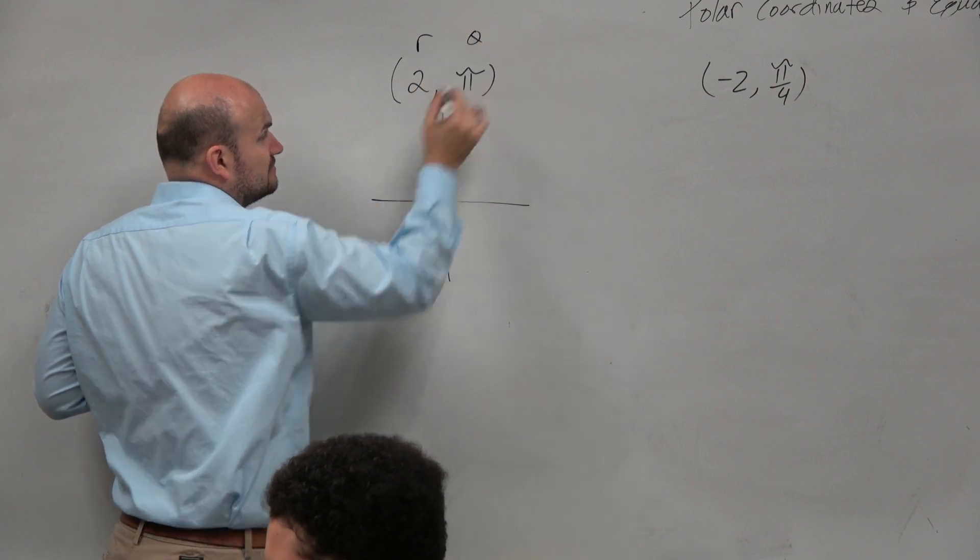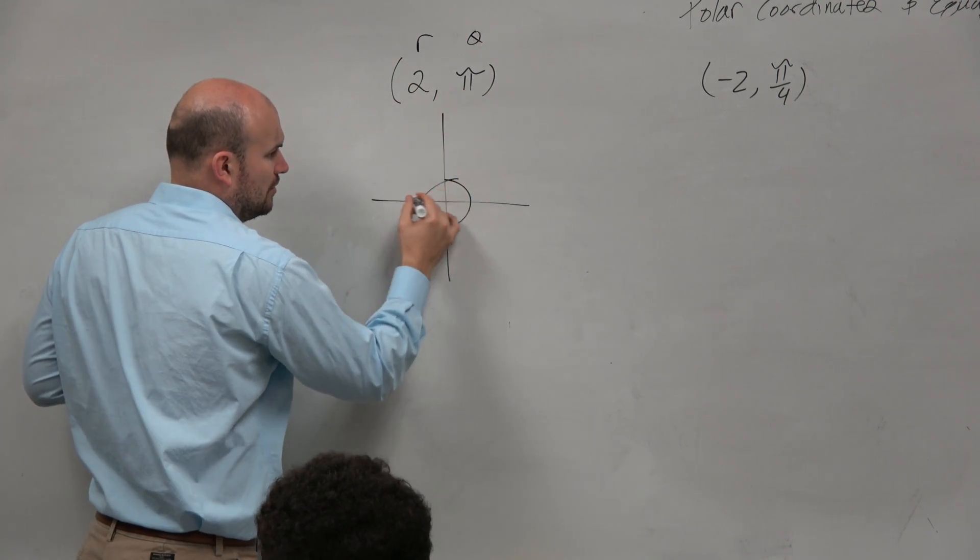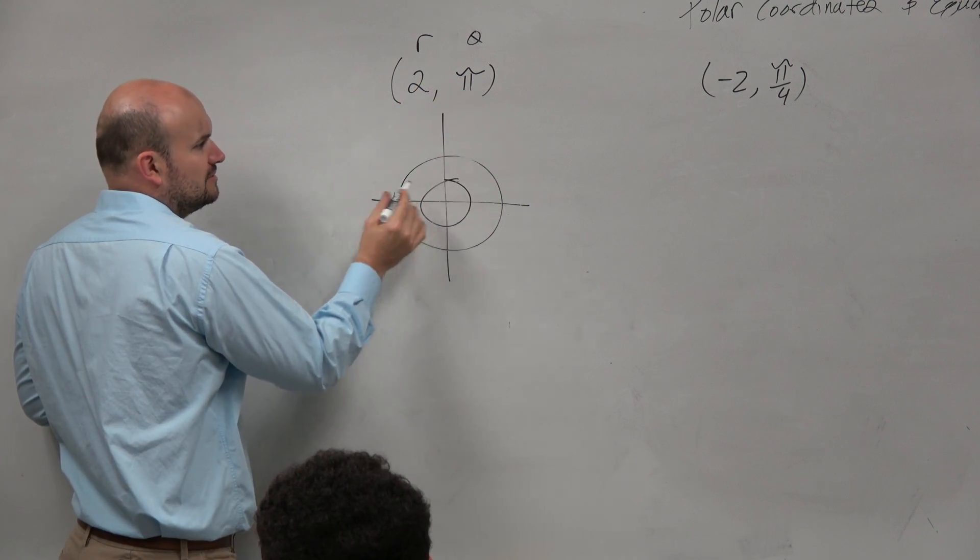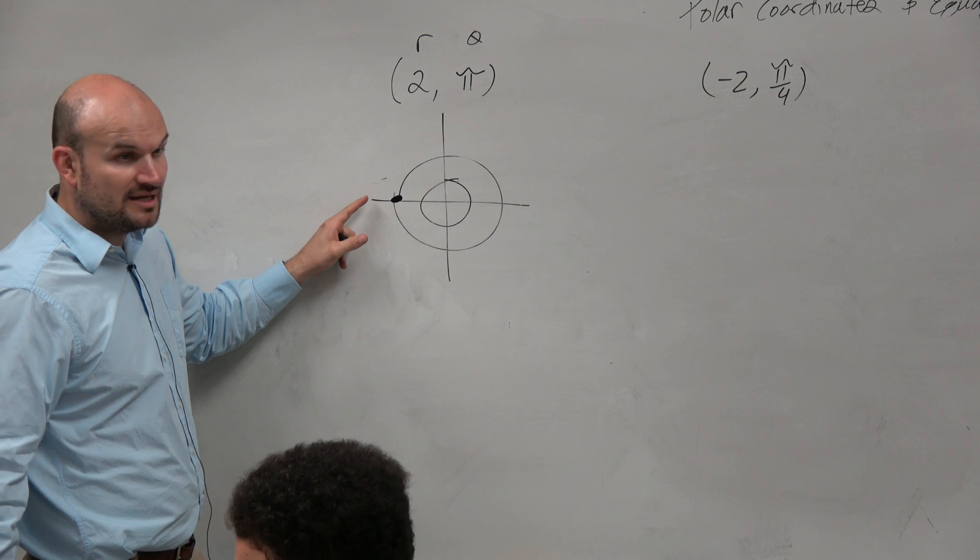We have r and theta. One radius, two radius, so it's around 2. We could say pi is right here. That looks pretty good, right? Yes?